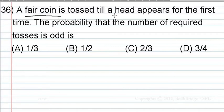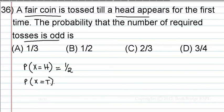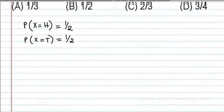A fair coin is tossed till head appears. What is the probability that the number of tosses required is odd? For a fair coin, let's say random variable X can take head or tail. Probability that X equals head is 1/2. Probability that X equals tail is also 1/2. Head or tail can appear with a probability of 1/2.